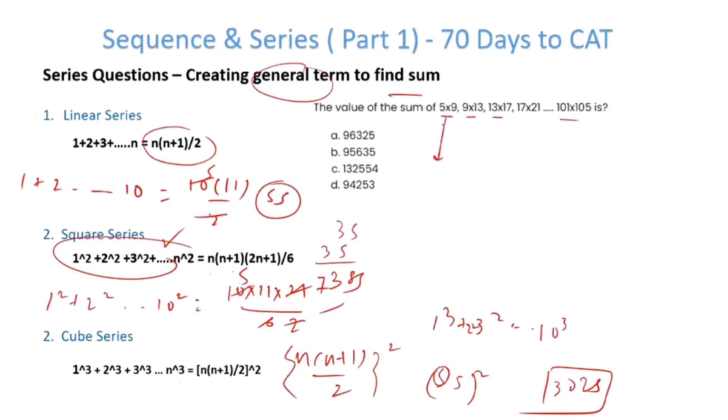Have a close look at this. This number is (4n+1)(4n+5). The more you create general terms, the better you get at it. 4n+1 times 4n+5—how do I know this?